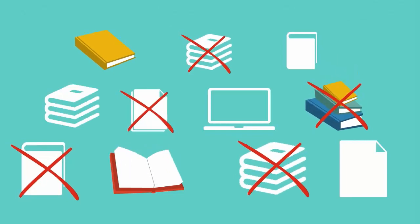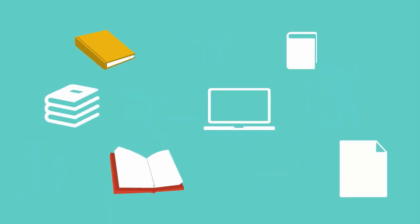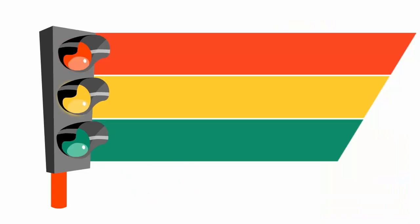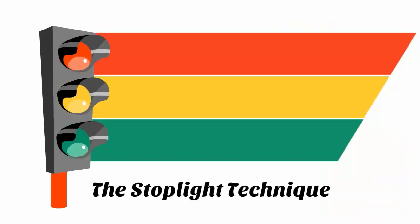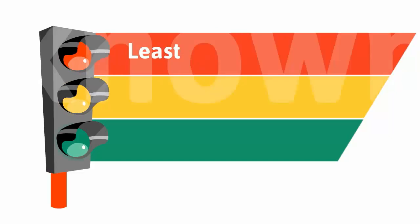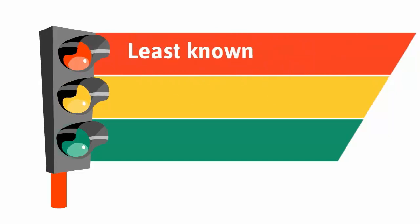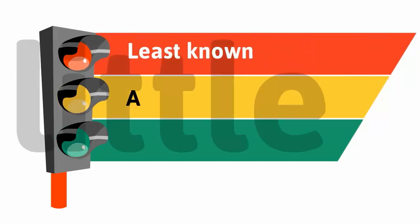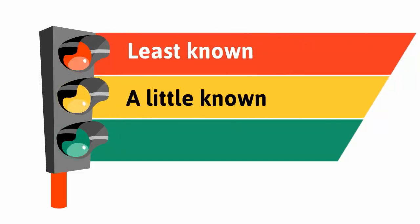Now that you have narrowed the amount of material you have to study, you can decide what to study first. The easiest way to prioritize your material is to use the stoplight study technique. With this technique, you color code what you know the least red, what you sort of know yellow, and what you really know green.